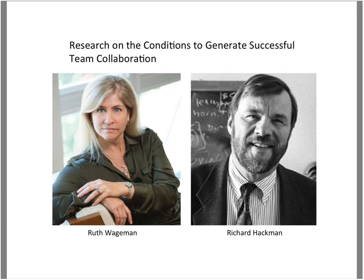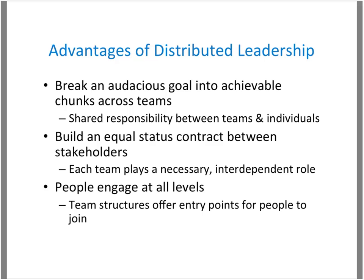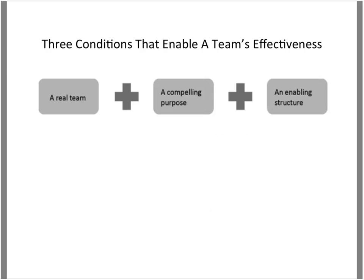We can actually put in place conditions that enable teams to work together more effectively. This research comes from Ruth Wagman and Richard Hackman, organizational psychologists out of Harvard University who dedicated their academic careers to understanding what makes teams work effectively. The three conditions we're going to put into place are: first, a real team with the right people; second, a compelling shared purpose; and third, an enabling structure with clear roles, clear norms, and real teamwork.